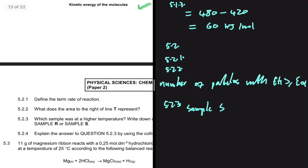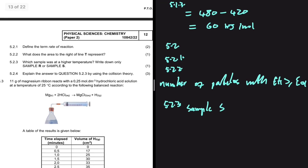For 5.2.4, we explain using collision theory. When temperature increases, particles gain kinetic energy — the average kinetic energy of the particles increases — and more particles will have sufficient kinetic energy, that is, a kinetic energy equal to or greater than the activation energy. So the area under the graph to the right of line T increases, as we saw with sample S.